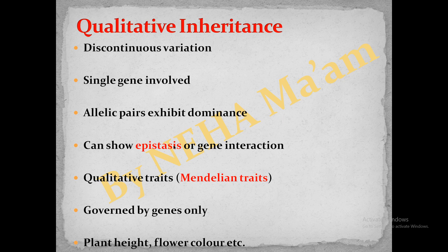There could be more than one gene involved, and those genes could show interaction, as in the case of epistasis. Qualitative inheritance is mainly governed by the genetic constitution of the organism only, and the environment plays no role. For example, plant height, flower color, etc. — all those traits studied by Mendel showed qualitative inheritance.